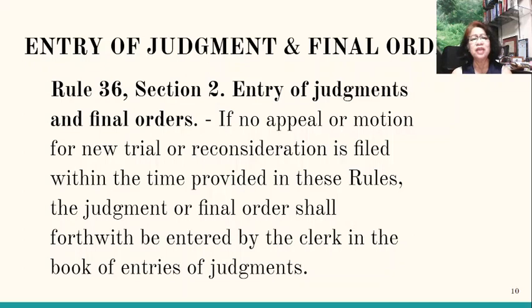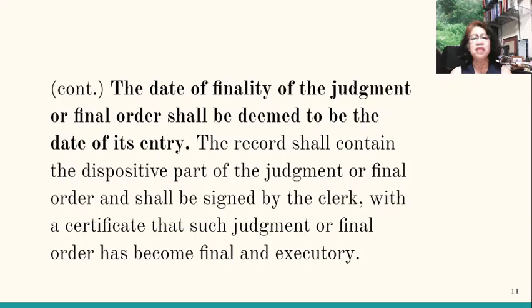Now let's proceed to entry of judgment and final order. This is found in Rule 36, Section 2. If no appeal or motion for a new trial or reconsideration is filed within the time provided in these rules, the judgment or final order shall forthwith be entered by the clerk in a book of entries of judgments. Even if there was an appeal or motion for new trial, once there are no further proceedings, it is returned to the court of origin and the judgment will be entered. The date of finality of the judgment or final order shall be deemed to be the date of its entry.